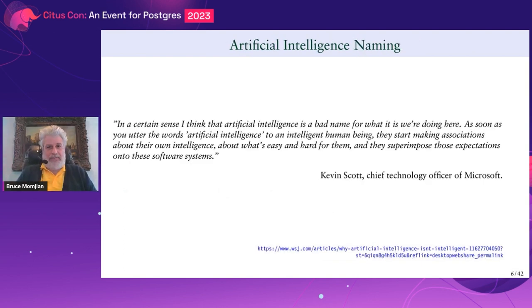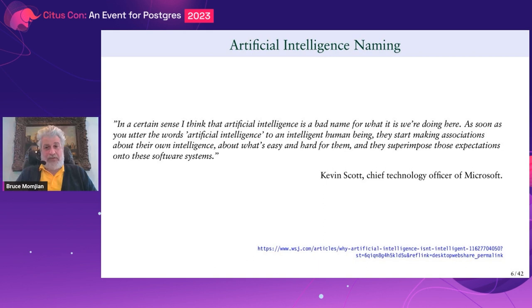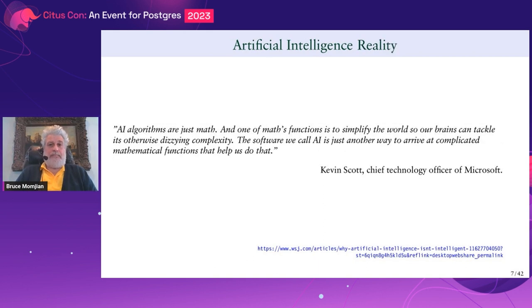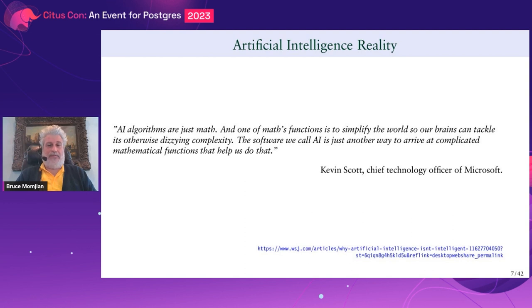There's a great quote from somebody at Microsoft who basically says artificial intelligence is, in a way, a bad name. What he's saying is it's superimposing human skills on top of a computer, and that's really a wrong way to go. Another quote from the same gentleman at Microsoft basically says you're using math — there's not really anything intelligent there, it just looks that way.